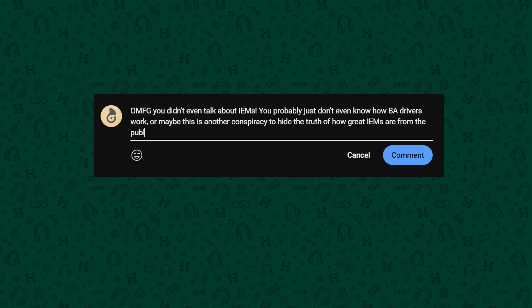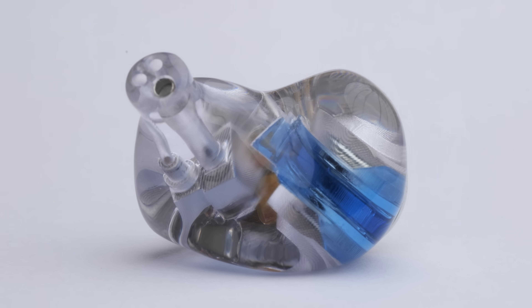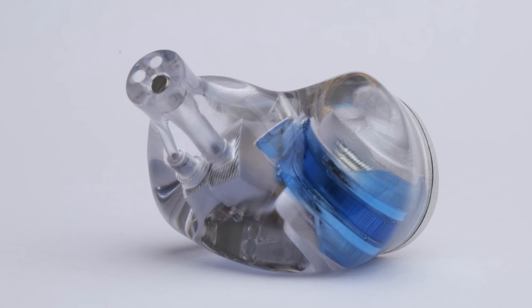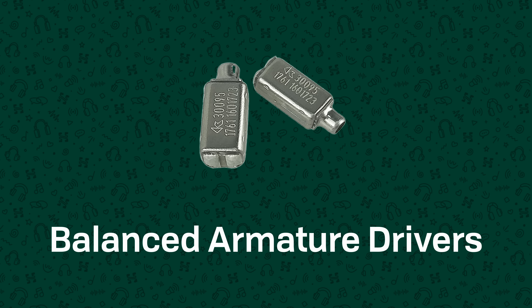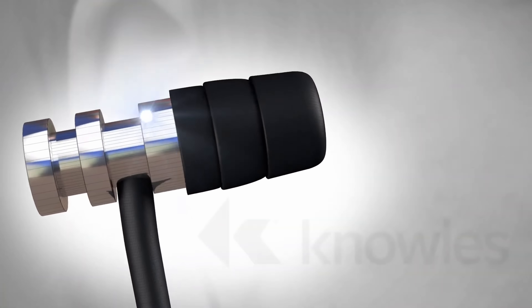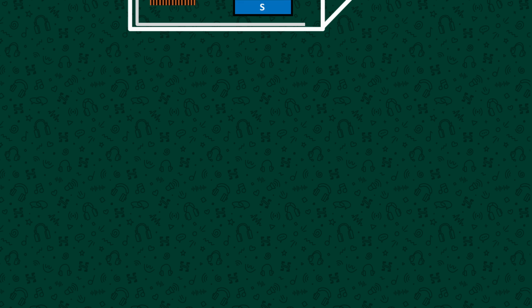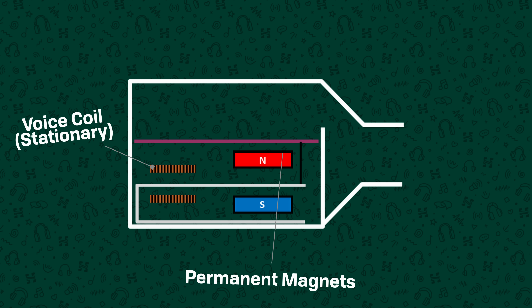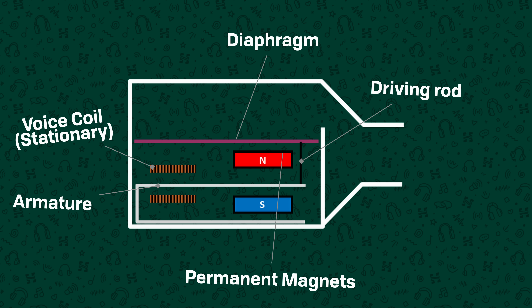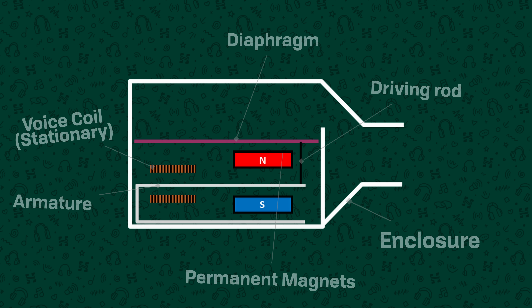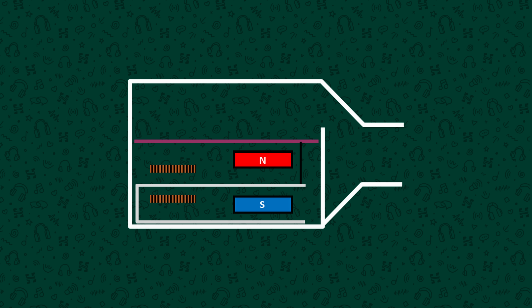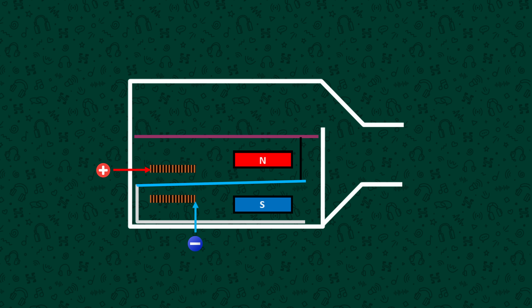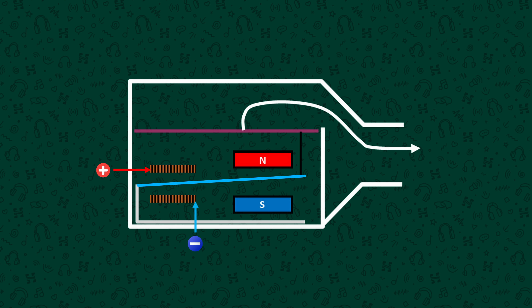IEMs or in-ear monitors can and do use many of the same driver types found in full-size headphones and speakers, but one type of driver that shows up almost exclusively in IEMs is the balanced armature or BA driver. Balanced armatures look like small metal boxes but inside they're quite clever little machines. They have a stationary metal coil and a pair of permanent magnets. Running through this coil and in between the magnets is a highly magnetically permeable U-shaped reed or armature with a rod connected to a diaphragm above. When no current is applied to the coil the armature is in a neutral or balanced position. When a voltage is applied to this coil the armature is magnetized and then interacts with the field from the permanent magnets being pulled or pushed in one direction. The coil and the magnets are both stationary — only the armature itself moves — and when it does so it then pushes the diaphragm with the attached rod, moving the air and creating sound.